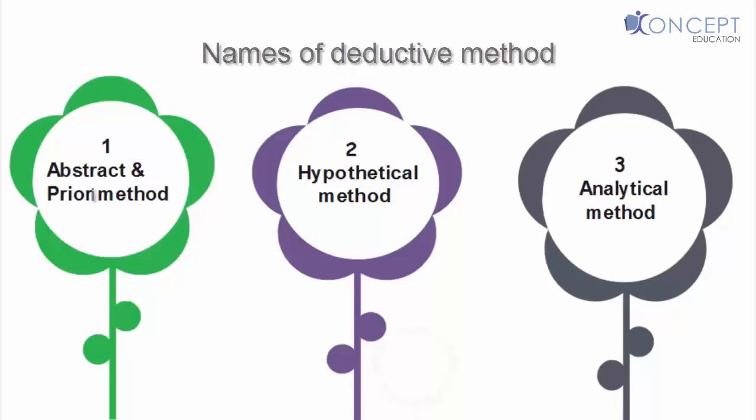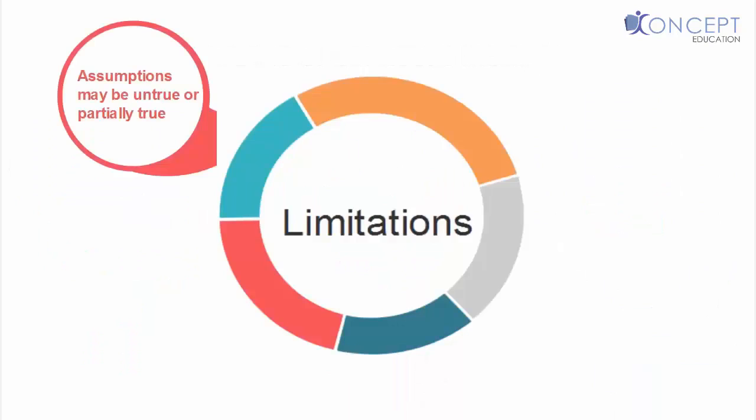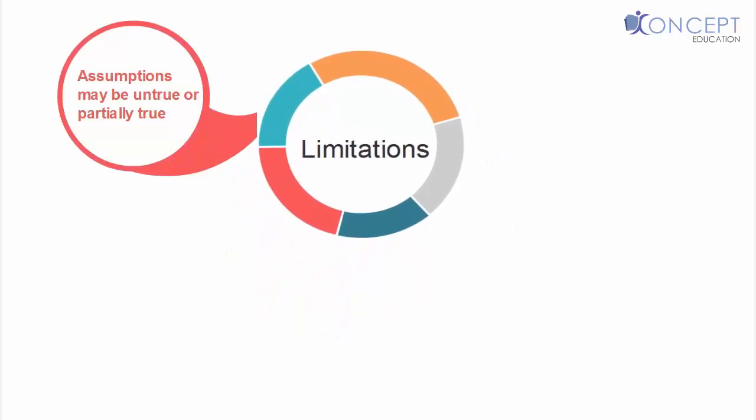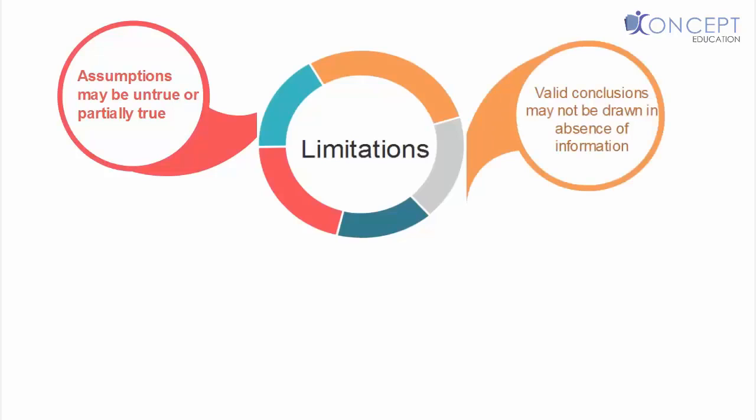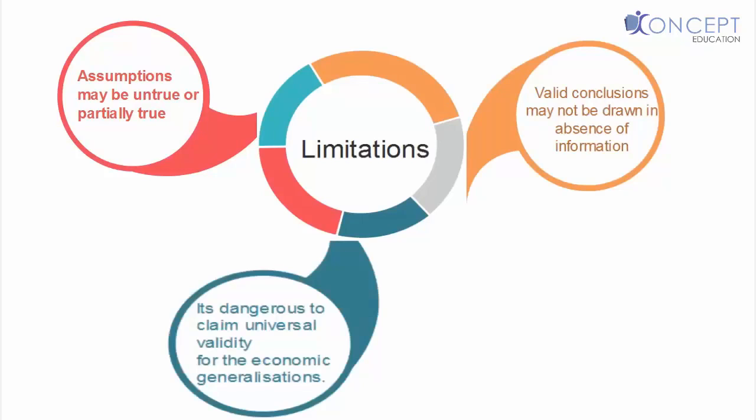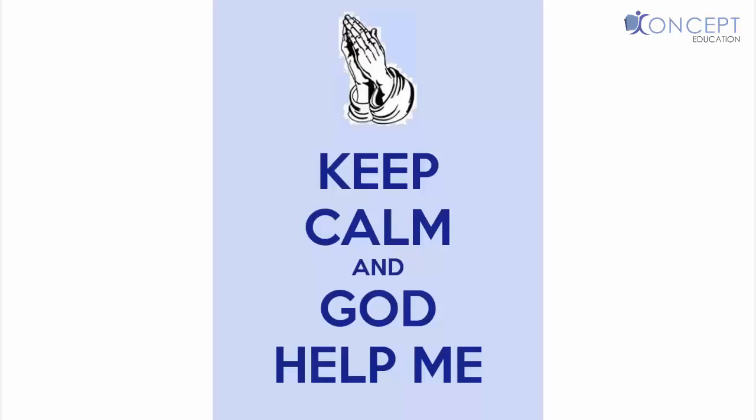However, this method has the following limitations too. First, assumptions may be untrue or partially true. Second, valid conclusions may not be drawn in absence of information. And third, it's dangerous to claim universal validity of economic generalizations. Now, let's understand the three demerits of this method taking an example. And in this example, God is going to help us. So, let's take the example on God.